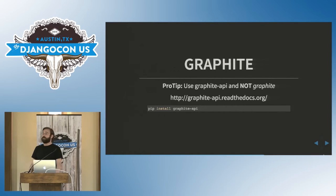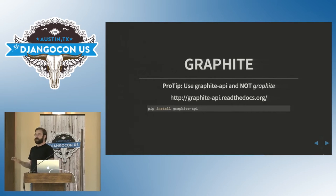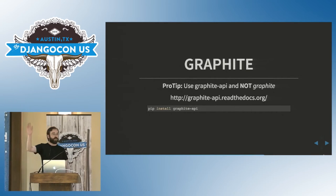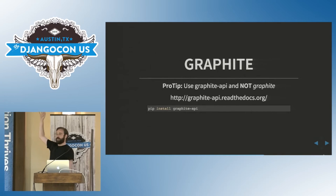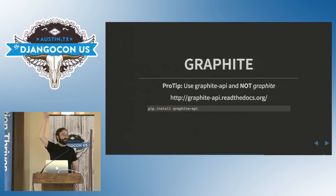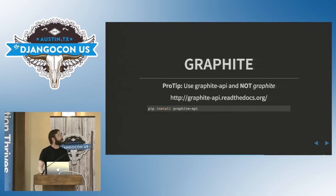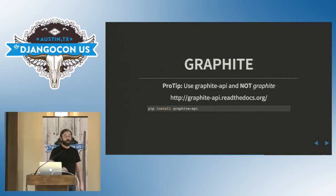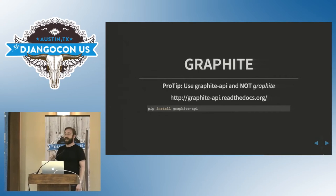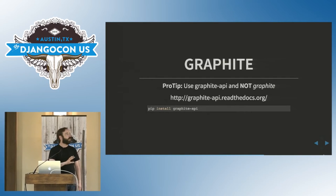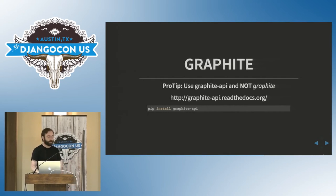I think the main reason people don't do metrics is because Graphite is a pain in the butt to install. Who here has wasted a day trying to get Graphite set up? Maybe people don't use it because it's hard. So there's an easier way, and that's Graphite API — it gets rid of all the hard parts of the setup and gives you just the parts you need to work with Grafana.